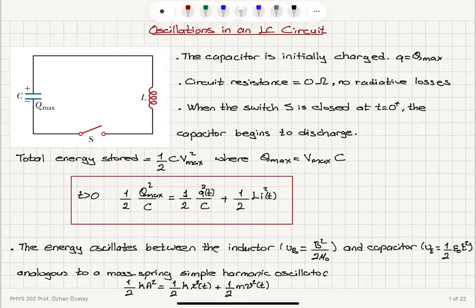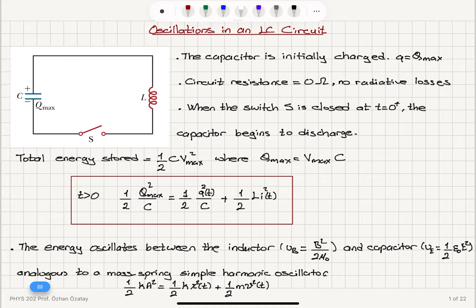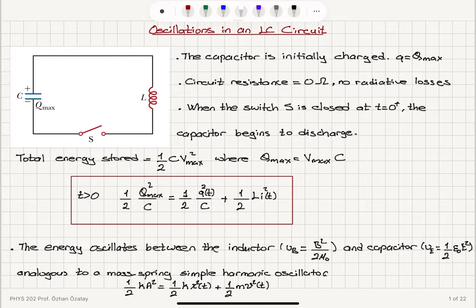That means we talk about energy conservation. When the switch S is closed at t equals zero plus, the capacitor begins to discharge, so current flows in the circuit and charge redistributes across the inductor. The total energy initially stored in the capacitor was one-half C·Vmax squared, where Qmax equals Vmax times C.